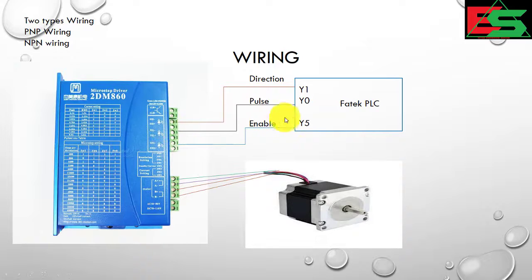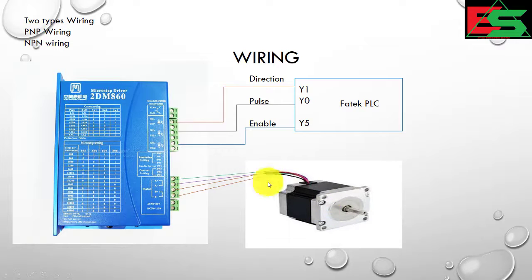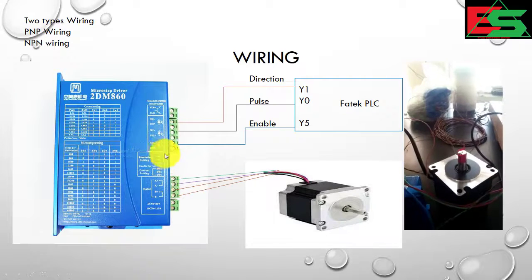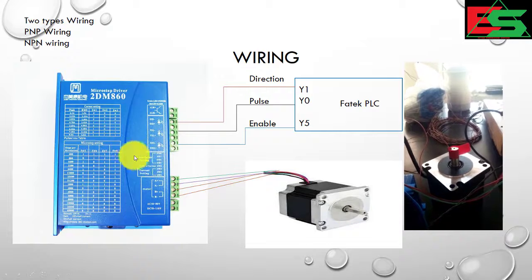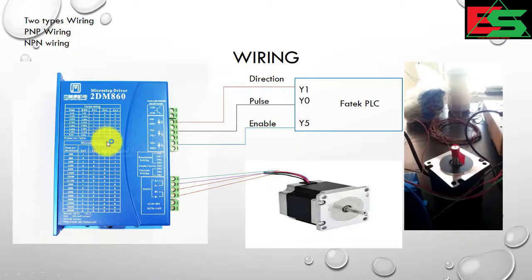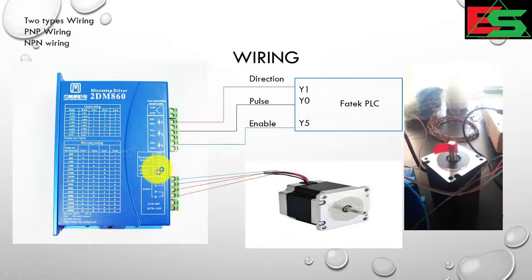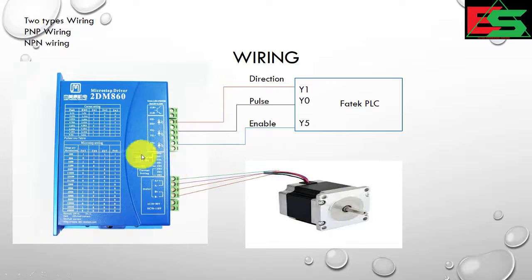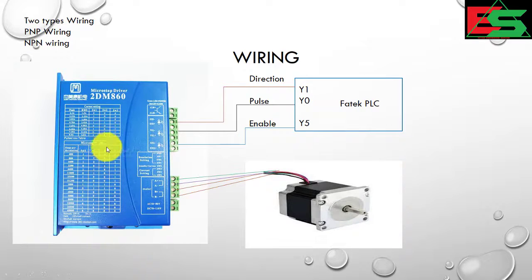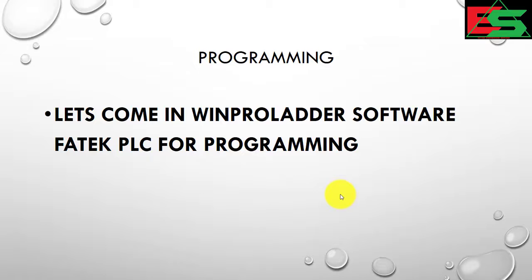I will connect this wire to the direction point, and this is the enable signal for the stepper motor. The A-plus, A-minus, B-plus, B-minus connection goes between the motor and driver. The DIP switches are for current rating of the stepper motor according to your specification. You have to select the DIP switches based on current setting and microstep setting from the table, according to your stepper motor specification.